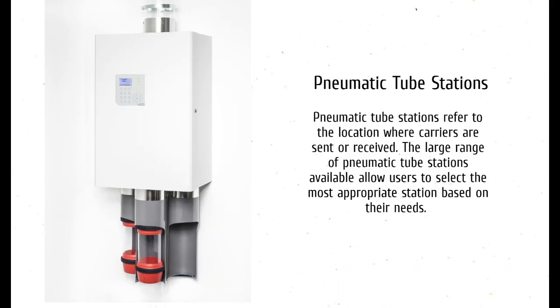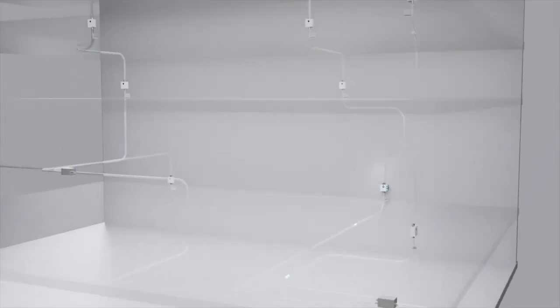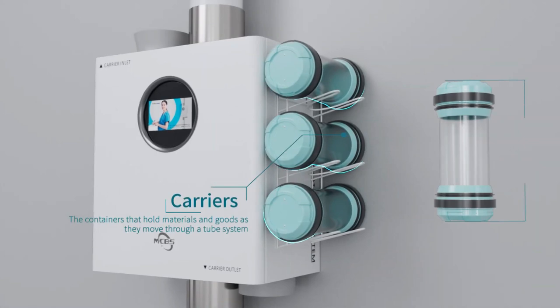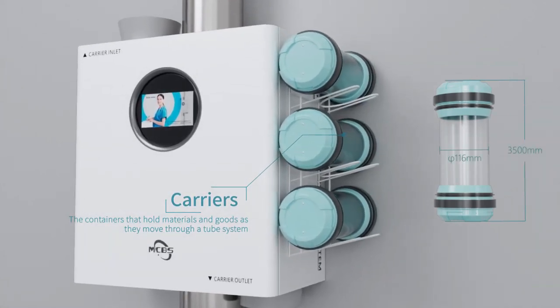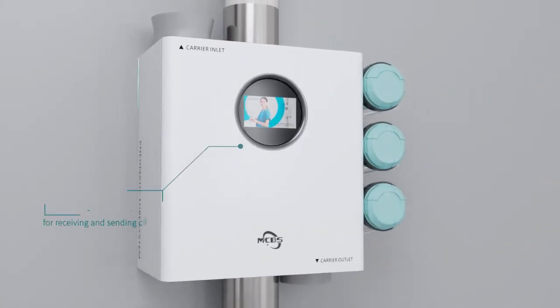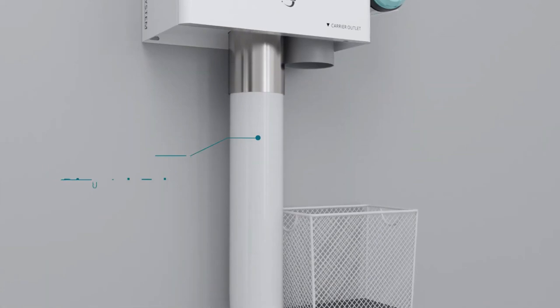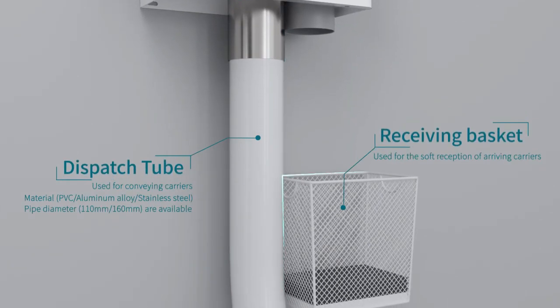The second component are pneumatic tube stations. Pneumatic tube stations refer to the locations where carriers are sent or received. The large range of pneumatic tube stations available allow users to select the most appropriate station based on their needs. Stations come in a large range of sizes and designs. Standard design includes a loading port and an interface panel. With users keen to improve efficiency, the latest designs have features such as auto-unloading. Accessories can also be added to ensure safe and secure transport, including receiving baskets, carrier storage, and arrival indicators.